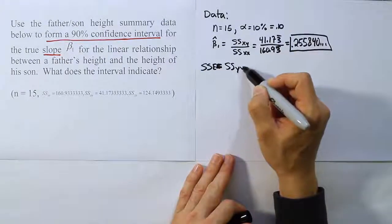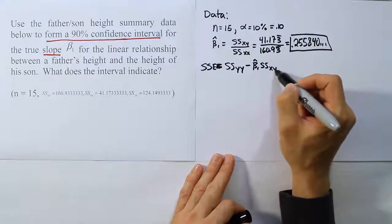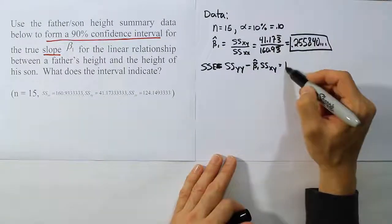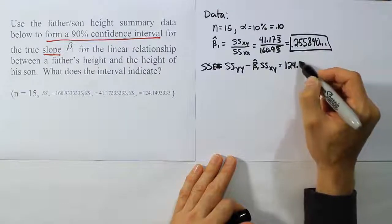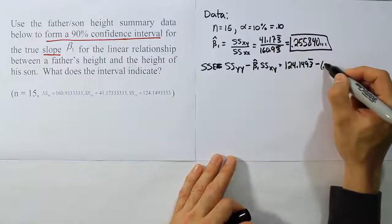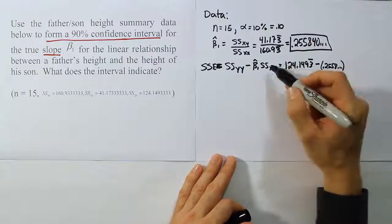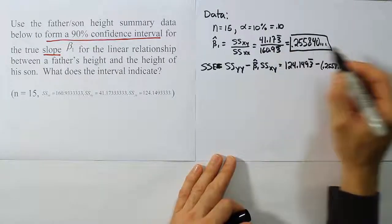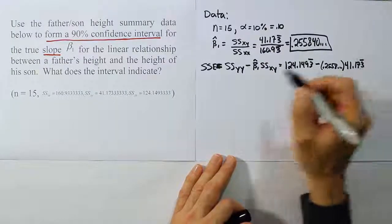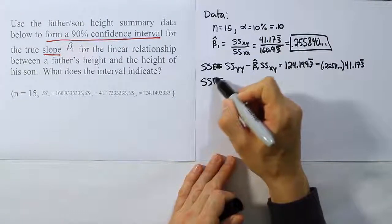The formula is SSYY minus the beta 1 hat value times SSXY. So SSYY, you can find here. It's given to us. It's 124.1493 repeating minus that slope value that we just had, which was 0.2558 dot dot dot times the sum of squares for the mixed term, which we actually have at the top of that fraction there. That's 41.173 repeating. Now when you're done with that, that will give us the sum of squares for error, SSE.